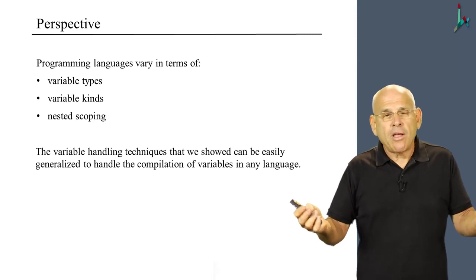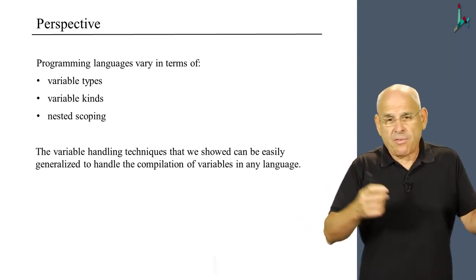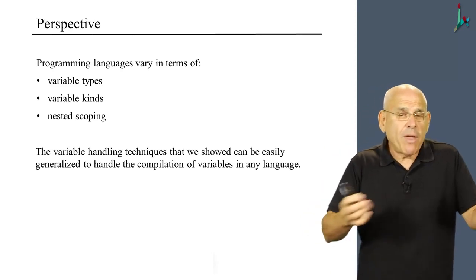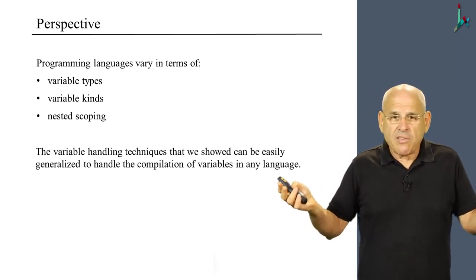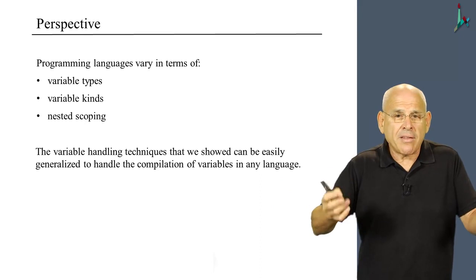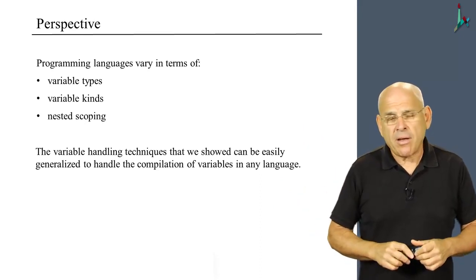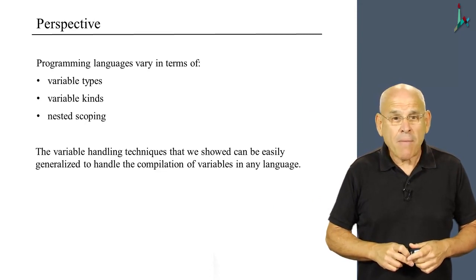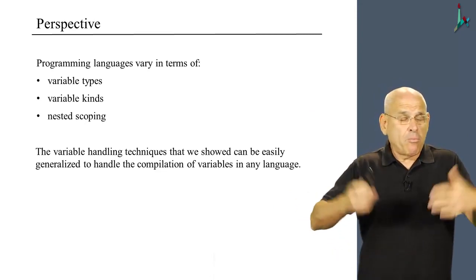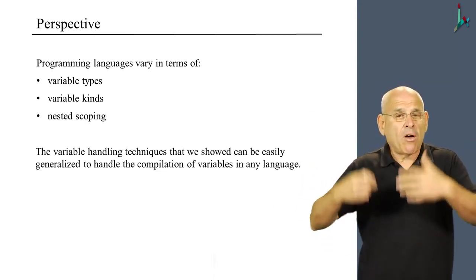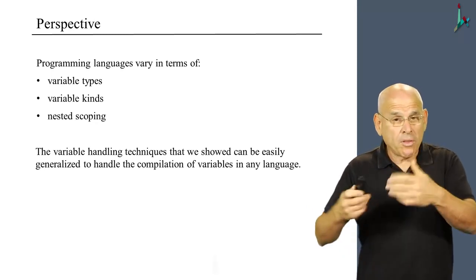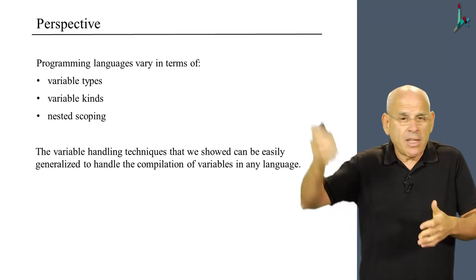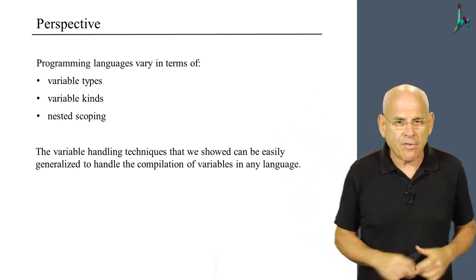In Java, for example, we have eight primitive variable types, or data types. And in Jack, we have three. It's a very small detail. We can handle any other primitive type just as well with our symbol table mechanism. Likewise, if you have more kinds of variables, we can also easily record this information in the symbol tables that we described. Maybe we'll need more columns or whatever. It's a small detail.